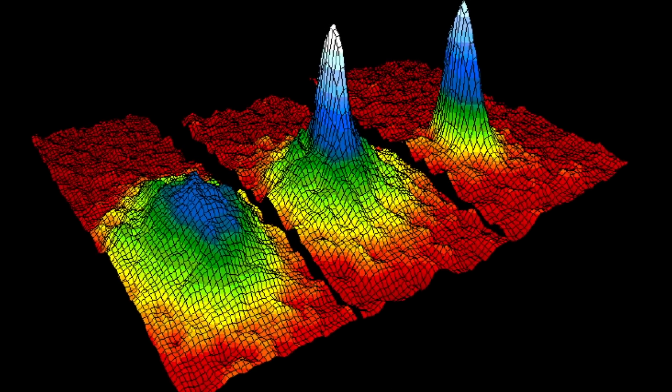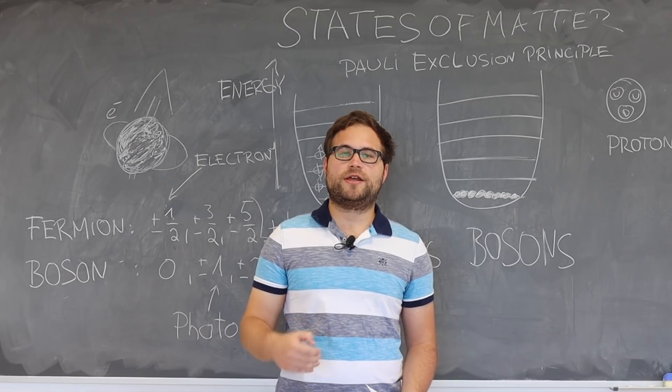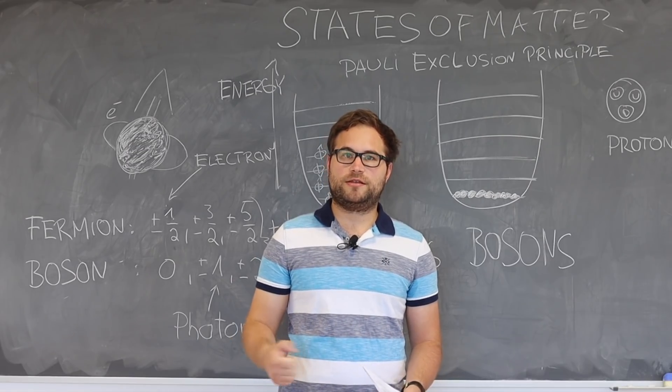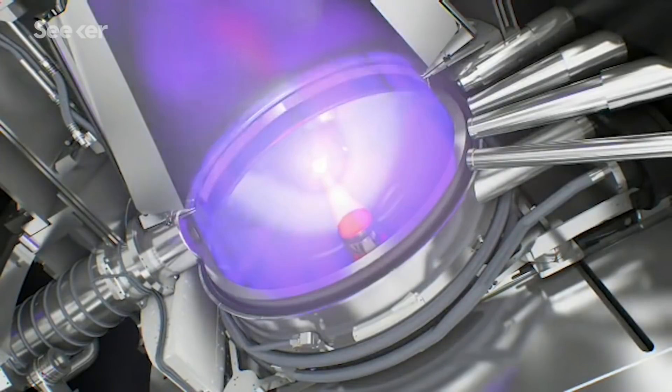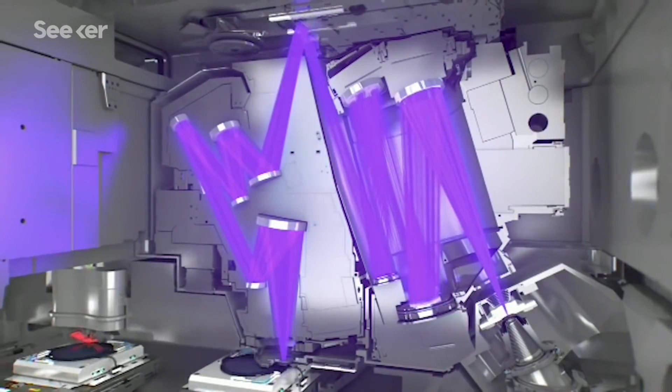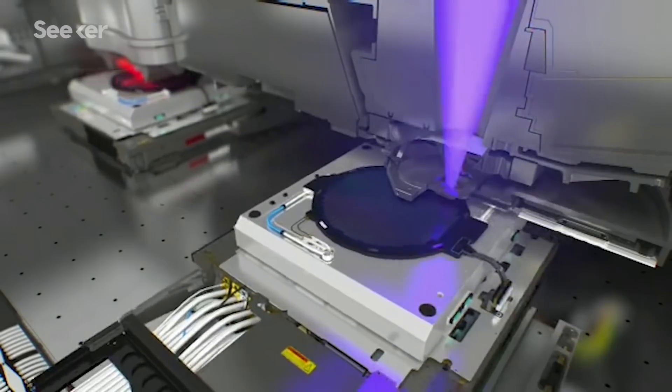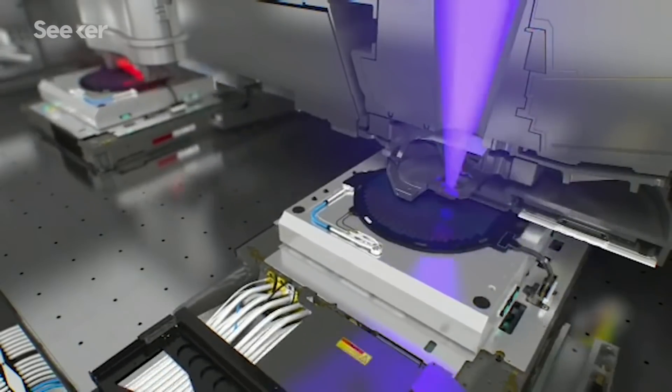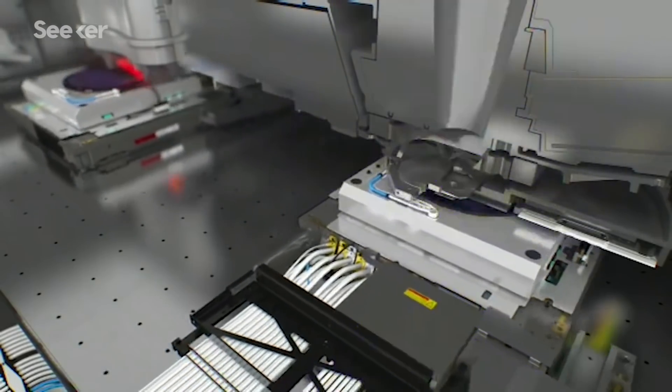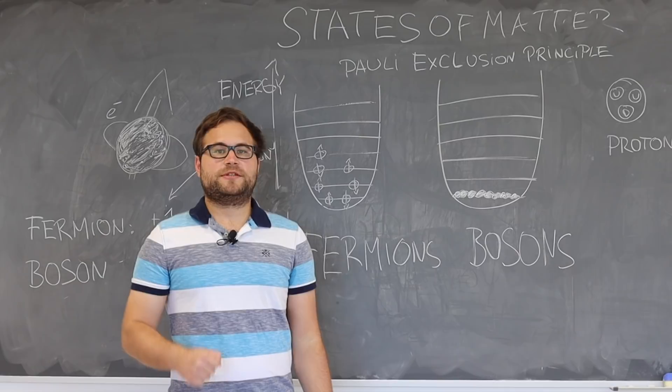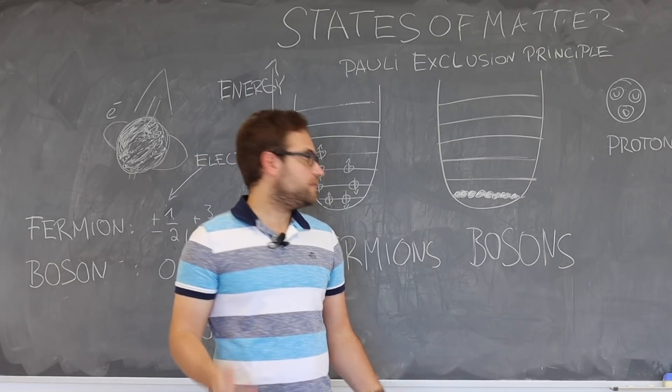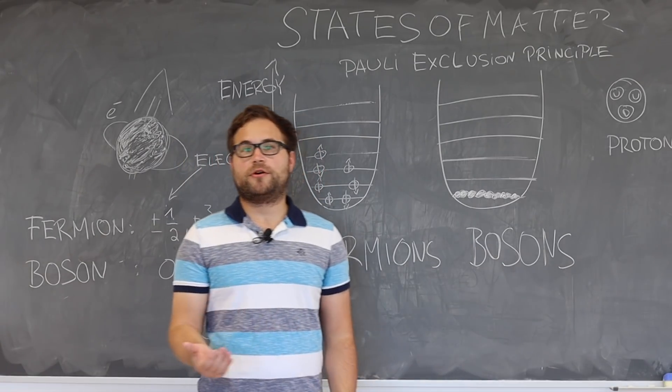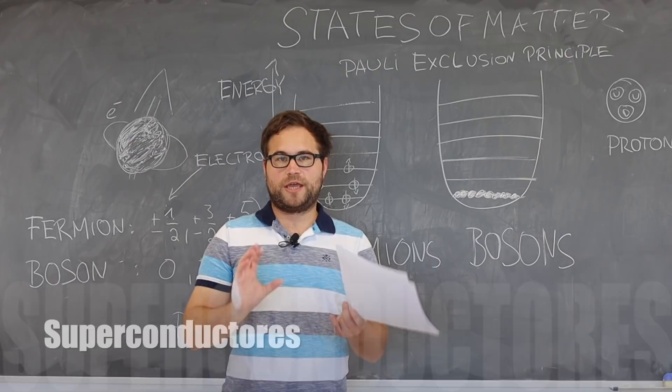We can use the Bose-Einstein condensate, for example, to generate laser light in the UV and x-ray. We can use this laser light for high precision applications, for example in computer technology where the laser light is used to engrave circuits in computer chips. Similarly, we could try to achieve a condensate made of fermions, a fermion condensate, by making composite particles of those fermions.